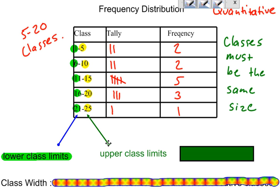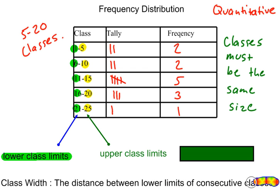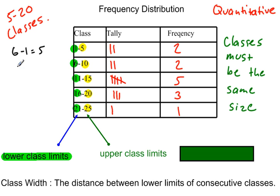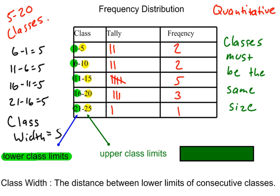Let's look at what class width is. The class width is the distance between the lower limits of consecutive classes. My lower limits are 1, 6, 11, 16, and 21. So 6 minus 1 equals 5, 11 minus 6 equals 5, 16 minus 11 equals 5, and 21 minus 16 equals 5. In this case, my class width is 5. You have to keep the same class width when you create your frequency distributions, otherwise you'll create deception.